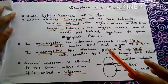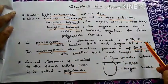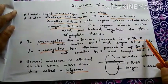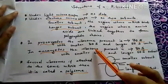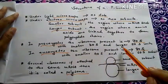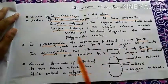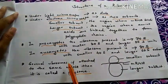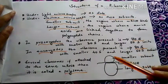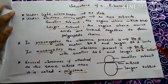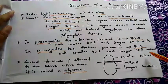In prokaryotes, the primitive forms, the ribosome present is of the 70S type, with a smaller subunit of 30S and a larger subunit of 50S. Whereas in eukaryotes, the ribosome present is of the 80S type, with a smaller subunit of 40S and a larger subunit of 60S.